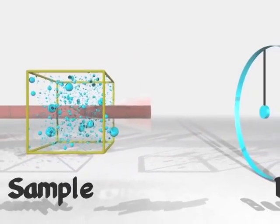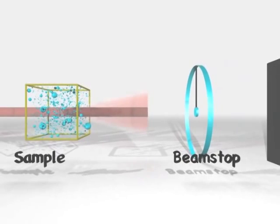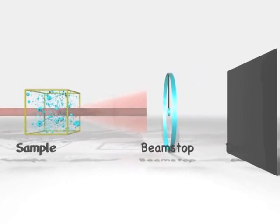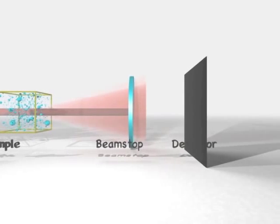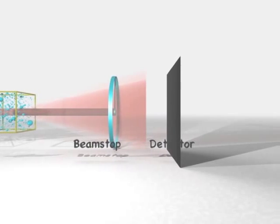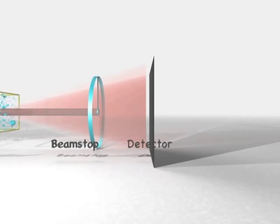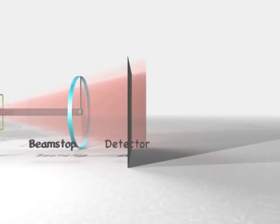To prevent the main beam from damaging the detector, the beamstop is designed to cut away the main beam and to let the scattered radiation pass through. The scattered radiation will then fall onto the detector, which will count the radiation.